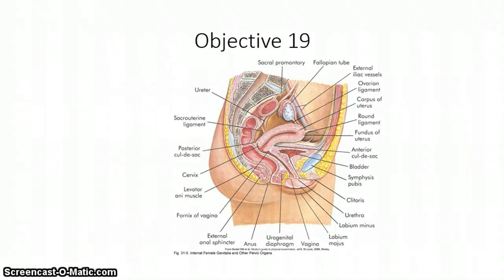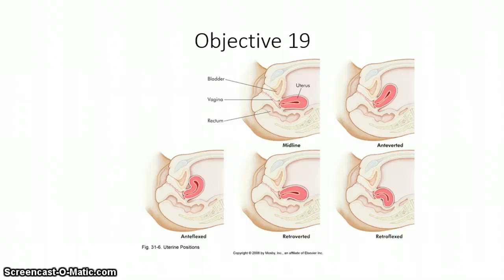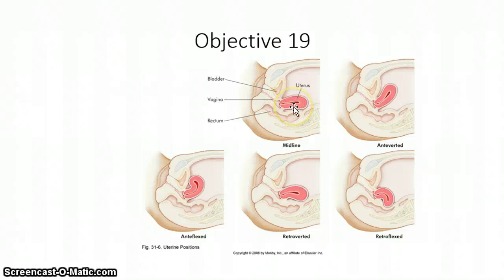The uterine tubes — also called the fallopian tubes — are terms you'll need to be aware of. Looking at another cross-section, you can see there are different positions of the uterus within the woman's pelvis: retroflexed, retroverted, antiflexed, midline — which is what we ideally like to see — and anteverted, which is common. The bladder sits above the uterus and the rectum sits below.